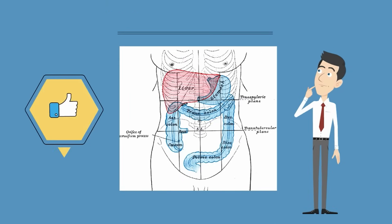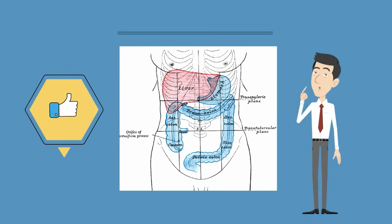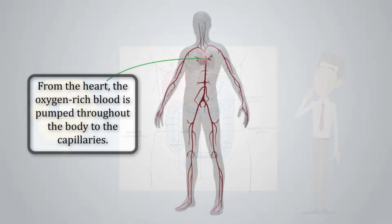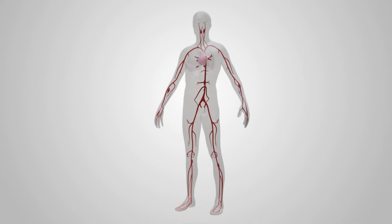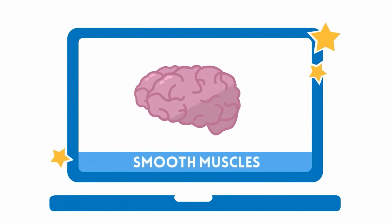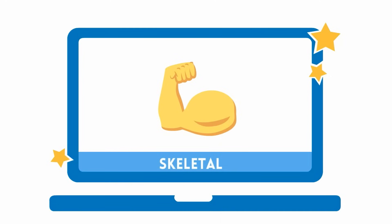Smooth muscles are found inside the digestive tract and inside veins and arteries, and they help to move blood throughout the body. Smooth muscles are involuntary muscles, which means you do not have to think about them in order for them to work. They help with the movement of food, waste, and blood throughout our body.